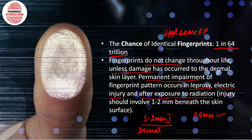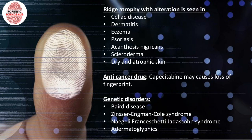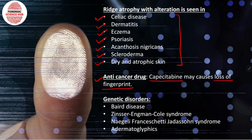Certain conditions exist when fingerprints are absent. Ridge atrophy with alteration is seen in: celiac disease, dermatitis, eczema, psoriasis, acanthosis nigricans, scleroderma, and dry and atrophic skin. An anti-cancer drug called capecitabine can also lead to loss of fingerprints. Genetically, diseases such as Bauer disease, Zinsser-Engman-Cole syndrome, Naegeli-Franceschetti-Jadassohn syndrome, and adermatoglyphia are all genetic disorders that lead to non-appearance of fingerprints.